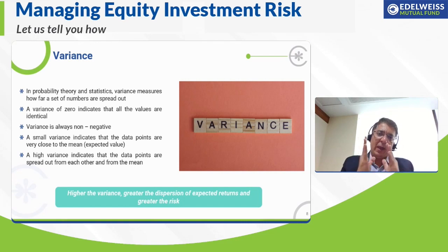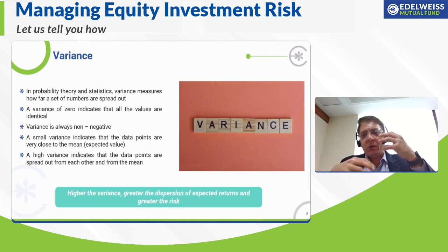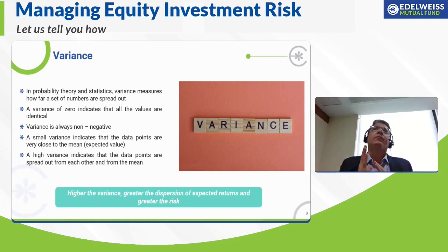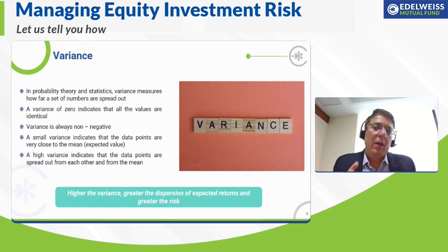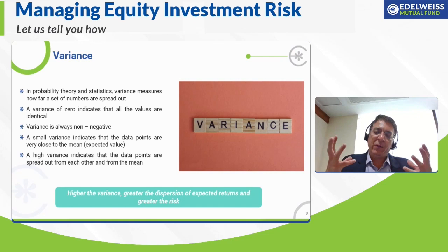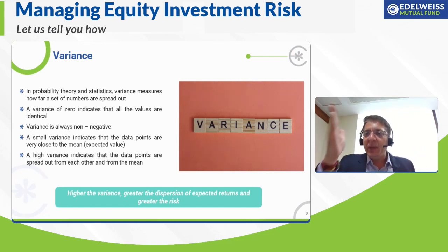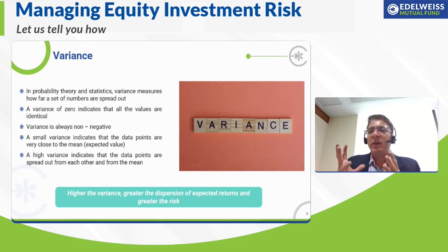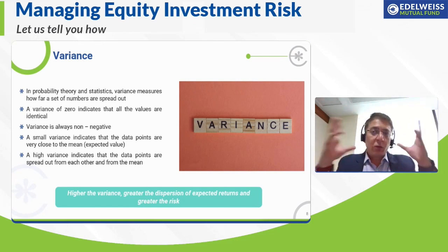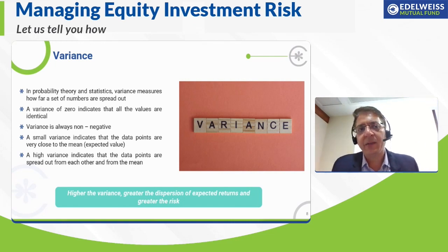A lower variance tells you the scheme is staying closer to its mean or average. If there is an average return over a five- or ten-year period, you want the scheme to be performing closer to that average in most years. A variance number gives you an idea of how closely the scheme has performed over time relative to the mean. If it's closer to the average, it's less volatile. For similar returns with less volatility, choose that scheme — that's what variance tells you.